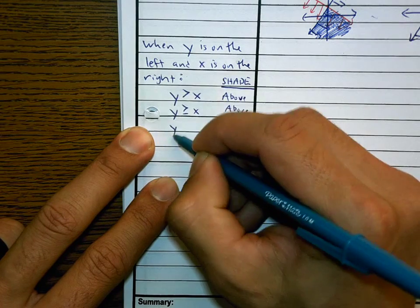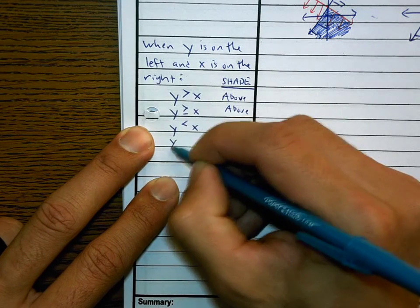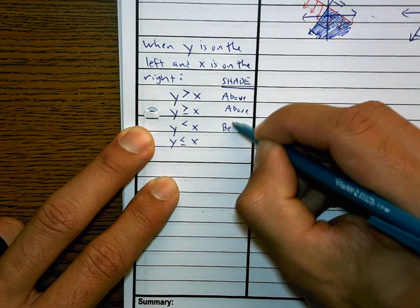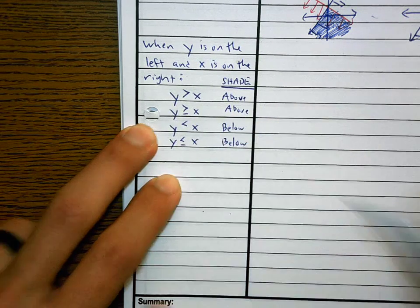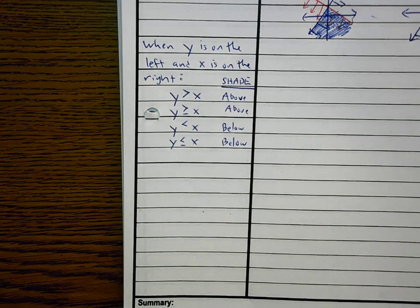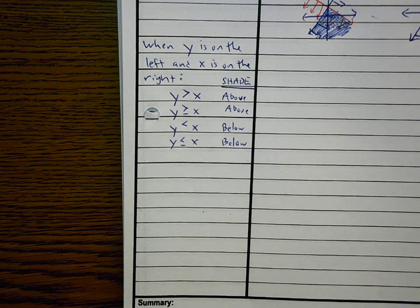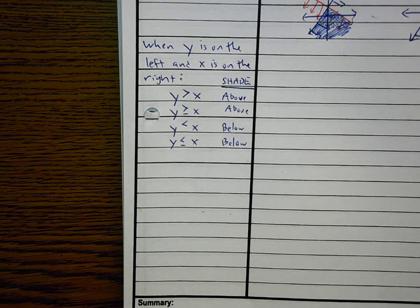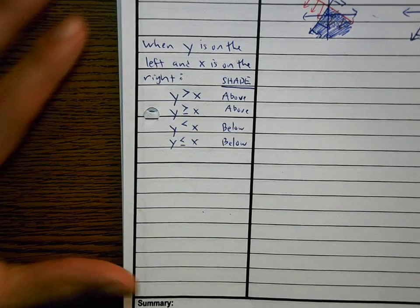When Y is on the left and X is on the right, if it's less than or less than or equal to, we shade below. This sometimes works, almost always works as a matter of fact. I'll say 9 times out of 10 this will work and it will be a shortcut for you. The times where it doesn't work is when you have a vertical line. I'm trying to think if a horizontal, no, horizontal lines work. Only a vertical line, that's the only exception to the rule.